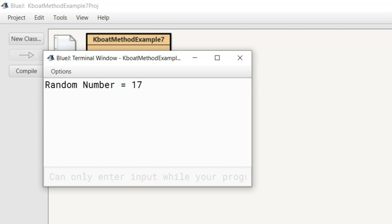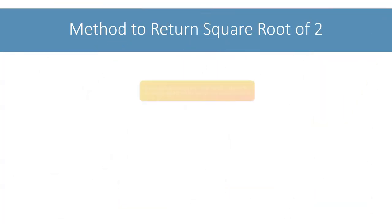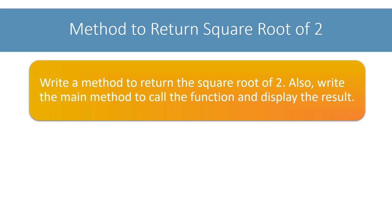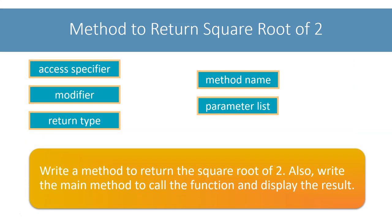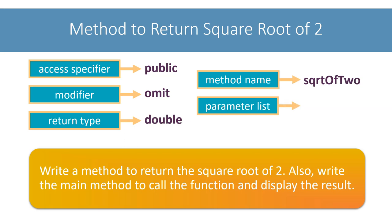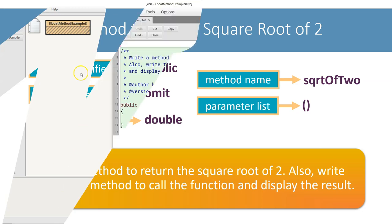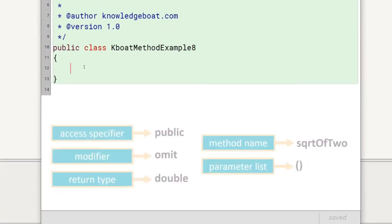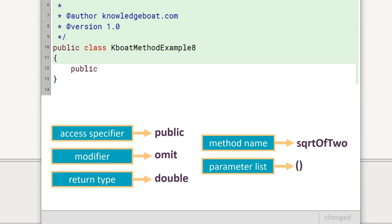Let's move on to the next example. The question is: write a method to return the square root of 2, and also write the main method to call the function and display the result. Let's figure out the prototype. Access specifier and modifier we already know. Square root of 2 is a fractional number, 1.41421 and the digits go on, so return type will be double. I will name it sqrtOf2. Its parameter list will be empty. The prototype will be public double sqrtOf2 with an empty parameter list.